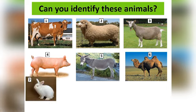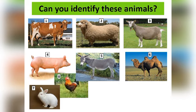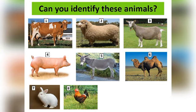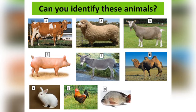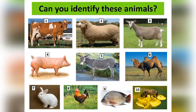Number seven — that's a rabbit. Which breed of rabbit is this? With red eyes. New Zealand White. Number eight — this is poultry. Which type of breed is this? This one is a Rhode Island Red. Number nine — that's a fish. Which type of fish is that? Tilapia. And ten — the honeybee.